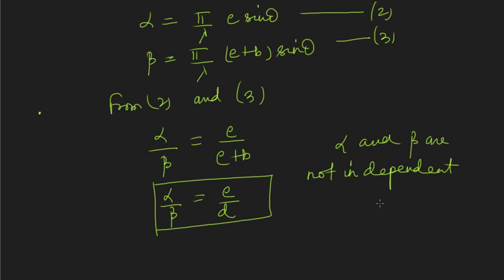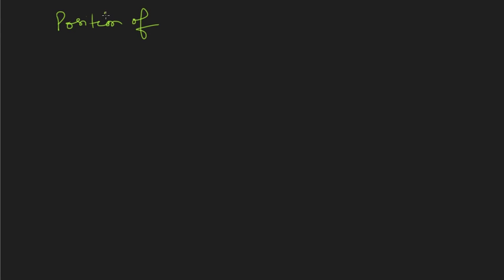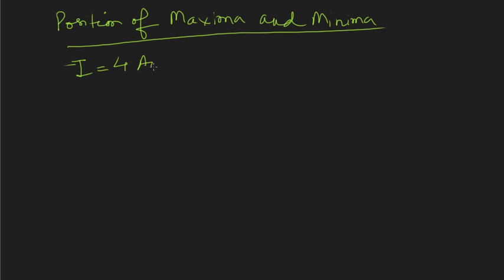Depending on what relation we choose between d (the distance between two slits) and e (the slit width), our intensity pattern will change. Let us now study the positions of maxima and minima. The intensity is I = 4A₀² · (sin²α / α²) · cos²β.